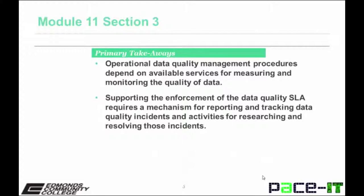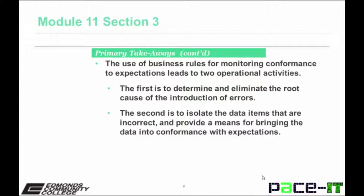Primary takeaways include the following. Operational DQM procedures depend on available services for measuring and monitoring the quality of data. Supporting the enforcement of the data quality SLA requires a mechanism for reporting and tracking data quality incidences and activities for researching and resolving these incidents. The use of business rules for monitoring conformance to expectations leads to two operational activities.